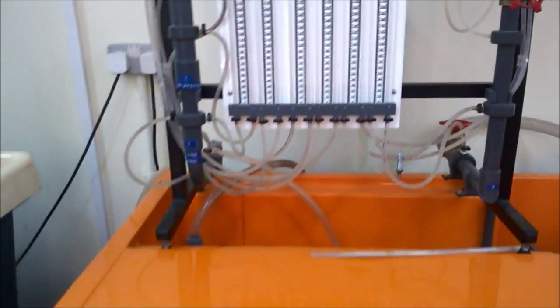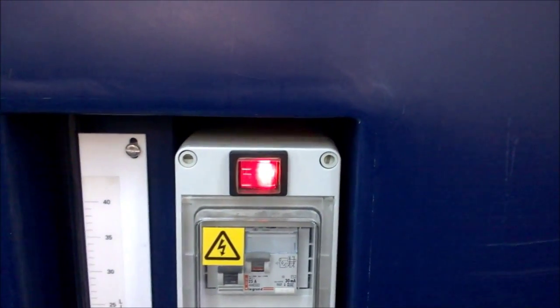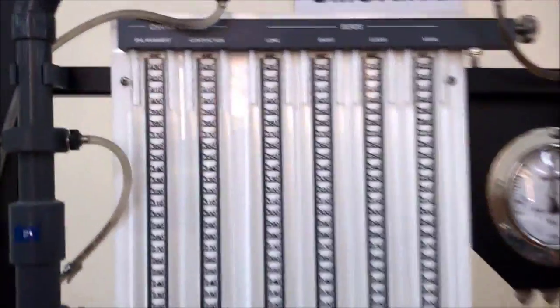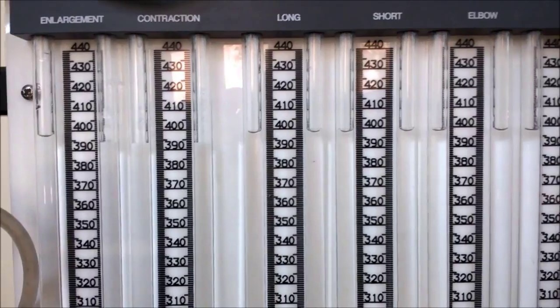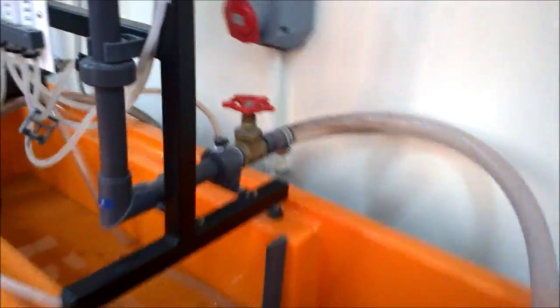In our first experiment, we will measure the loss across all the pipe fitting, except the gate valve. Note here, all the manometers height are the same when there is no flow rate, when the flow control valve is fully closed.